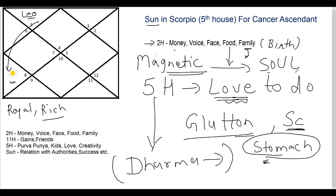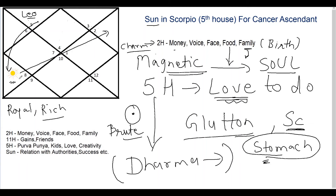Sun represents your basic self and your soul, and it is not only placed in the very beneficial fifth house but is also aspecting the eleventh. So people will be sort of attracted towards you; you will have a nice charm in society, in your social circle, and among your friends. You could be the center of your social circle, and that position will not come from brute force. Sun in the sign of Scorpio is a very masculine position, but because it is in the fifth house and aspects the eleventh with Taurus sign, the command you have over other people will be through charming soft power.